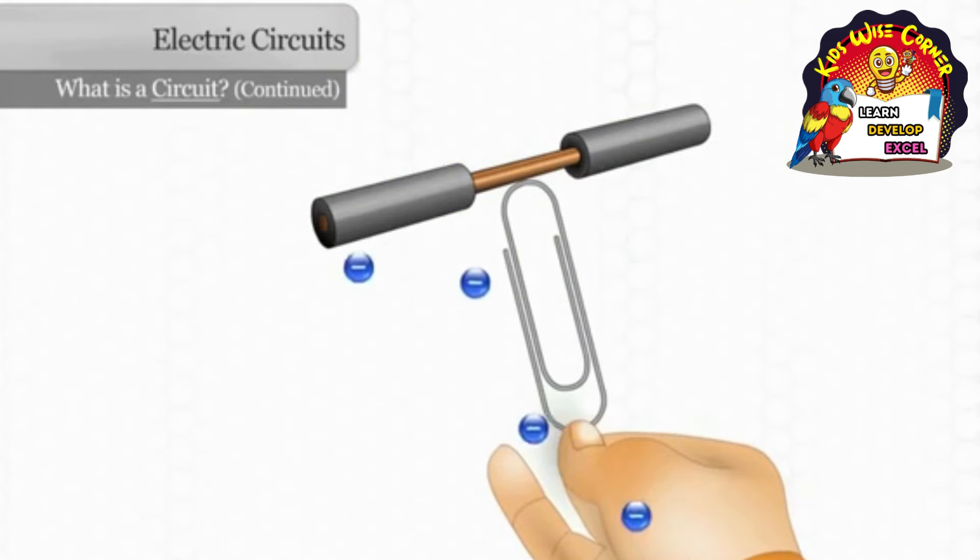Electricity will follow the path of least resistance. If the electrons take a path short of the complete circuit, it is called a short circuit.